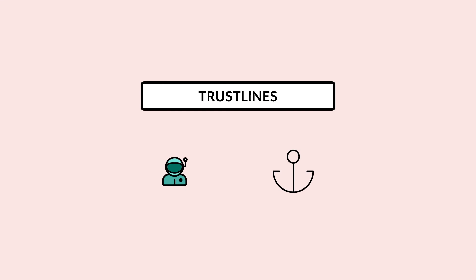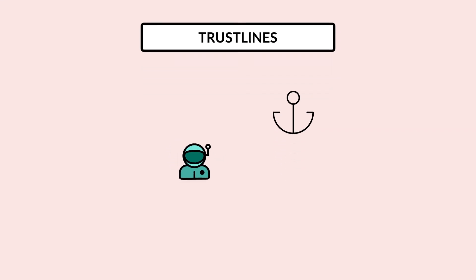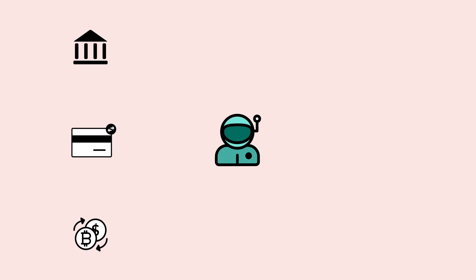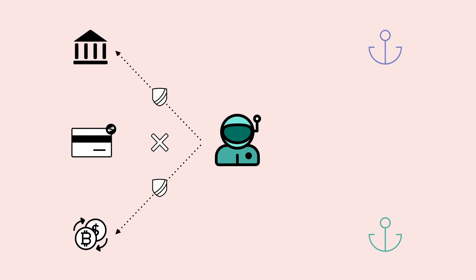To hold an asset from an anchor, you must issue a trust line to that anchor's account. Just as you only do business with banks and exchanges you trust, you should only work with anchors you trust to hold your assets and honor your withdrawals.